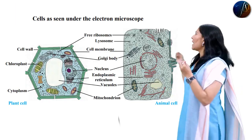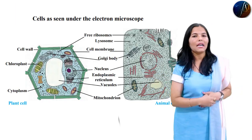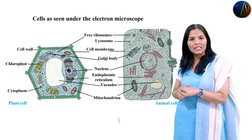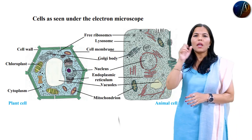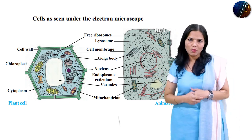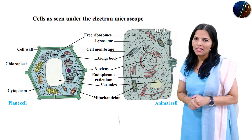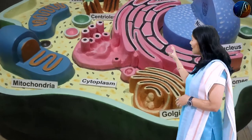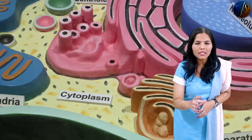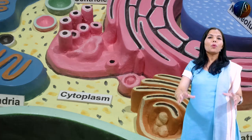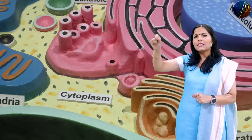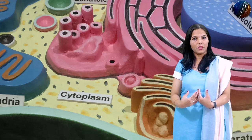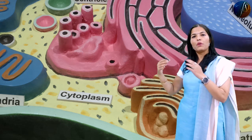If you observe the diagram of the animal cell and plant cell, you will notice that in the animal cell, the cytoplasm is more dense as compared to the plant cell.